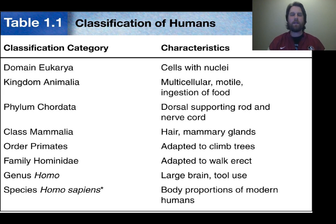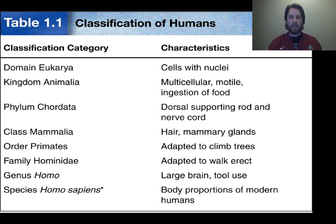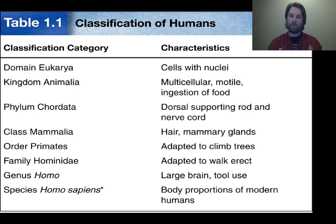If you're curious about the full classification of humans: humans belong to domain eukarya, kingdom animalia, phylum chordata — because we have a dorsal supporting rod and nerve cords, meaning your backbone and spine — class mammalia, order primates, family hominidae, genus homo, species sapiens. That's our whole classification.